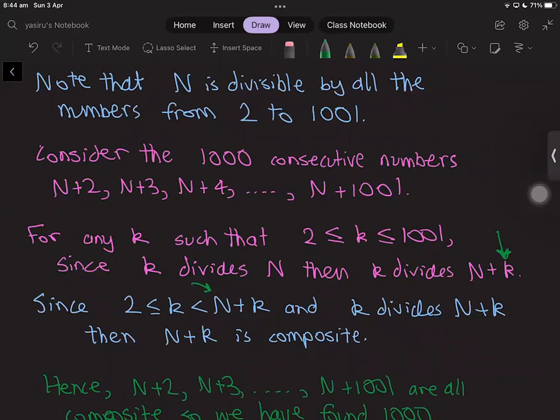This is sufficient to conclude that N+k is composite, because we found a factor of the number that's greater than 1 and less than the number itself.